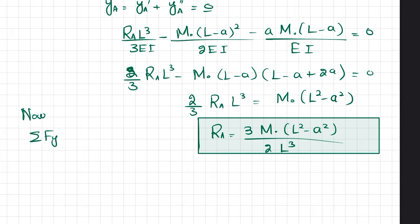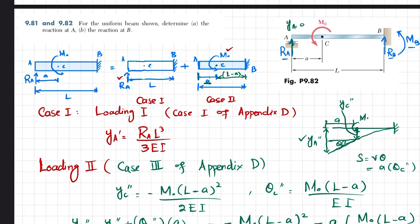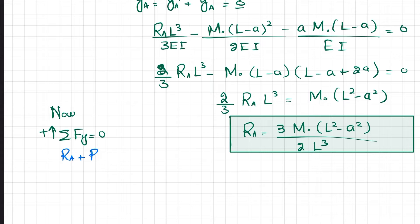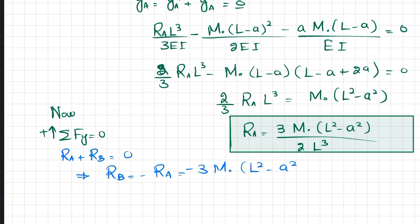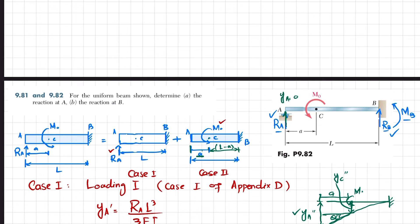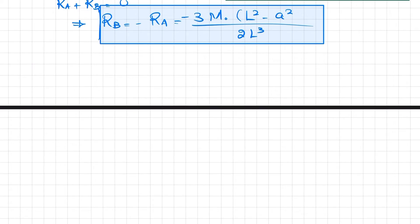Taking the sum of all forces in the y-direction equal to zero, with upward forces positive, we have only RA and RB. So RA + RB = 0, meaning RB = −RA = −3M₀·(L² − a²) / (2L³). Since we assumed RB upward but the result is negative, RB acts downward.